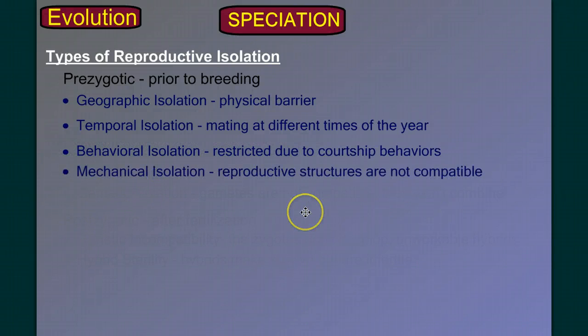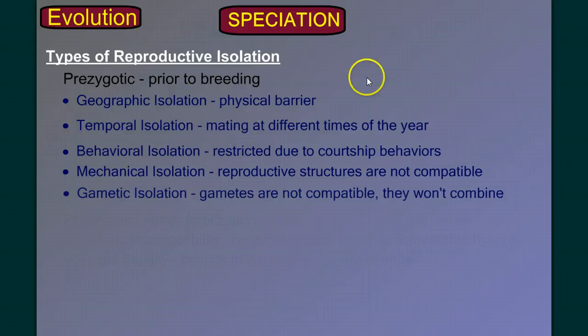How about mechanical isolation? It's when parts just don't fit — when reproductive structures are incompatible, then again, you might as well be on the other side of the mountain range. And we have gametic isolation. Maybe you can mate, but before the zygote forms, the gametes are not compatible — they won't combine. The sperm and egg won't combine, and therefore those individuals are reproductively isolated from each other.